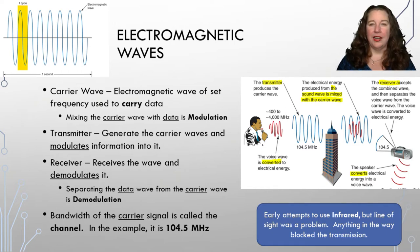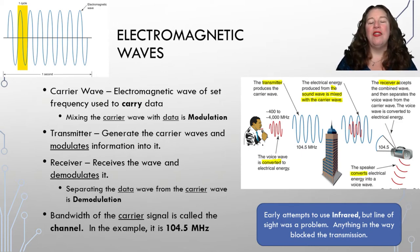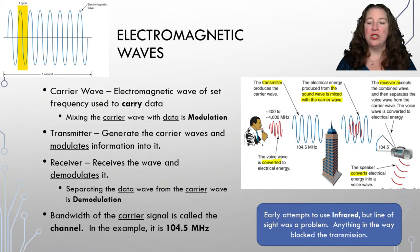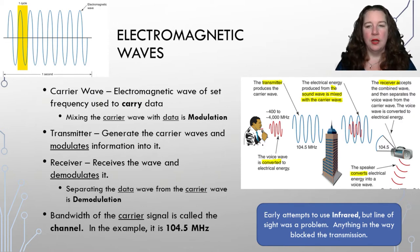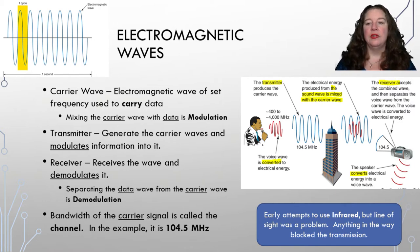The bandwidth of the carrier wave is called the channel. For example, if you go to your radio and tune to 104.5, that carrier signal is at channel 104.5 megahertz. In the image on the right, a gentleman talks into a microphone — the voice wave is converted into electrical energy, the transmitter produces the carrier wave and modulates that data into the transmission. The receiver then accepts the combined wave, demodulates it, and the speaker converts it back into a voice wave.